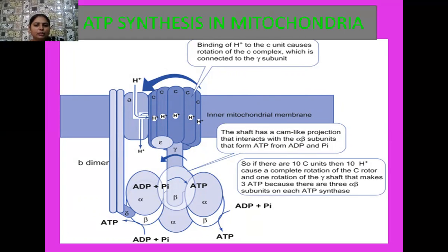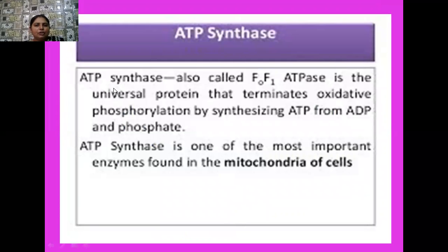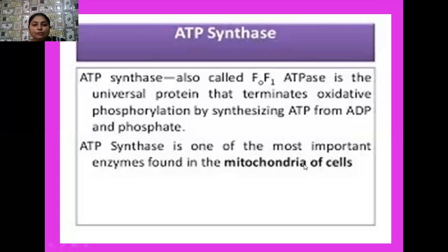In this diagram I have shown you the component of ATP synthase enzyme, which is complex V. The proton gradient gets established on the inner surface of the inner mitochondrial membrane called cristae, and two protons enter into the ATP synthase enzyme's F0 particle and are finally removed from the F1 particle, and as a result one ATP molecule is synthesized. ATP synthase, also called F0-F1, is the universal protein that terminates oxidative phosphorylation by synthesizing ATP from ADP and inorganic phosphate, and is one of the most important enzymes found in the mitochondria.